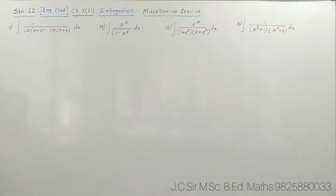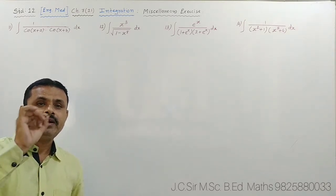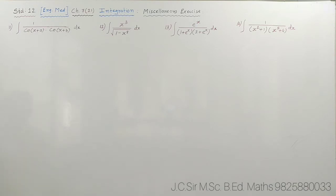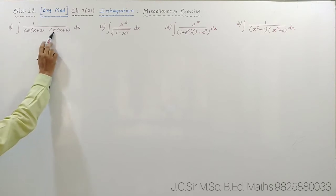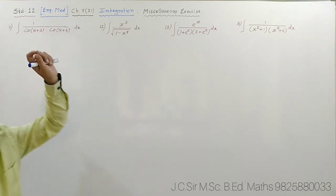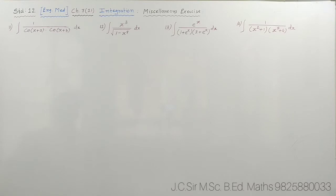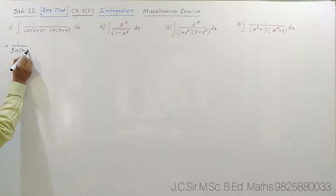Consider the integral 1/(cos(x+a)·cos(x+b)) dx. In the last lecture, I showed a similar problem: make the numerator with the help of the denominator. The rule is: if cos·cos or sin·sin is there, divide by sin(b−a); if sin·cos or cos·sin is there, divide by cos(a−b). So I will divide and multiply by sin(a−b).